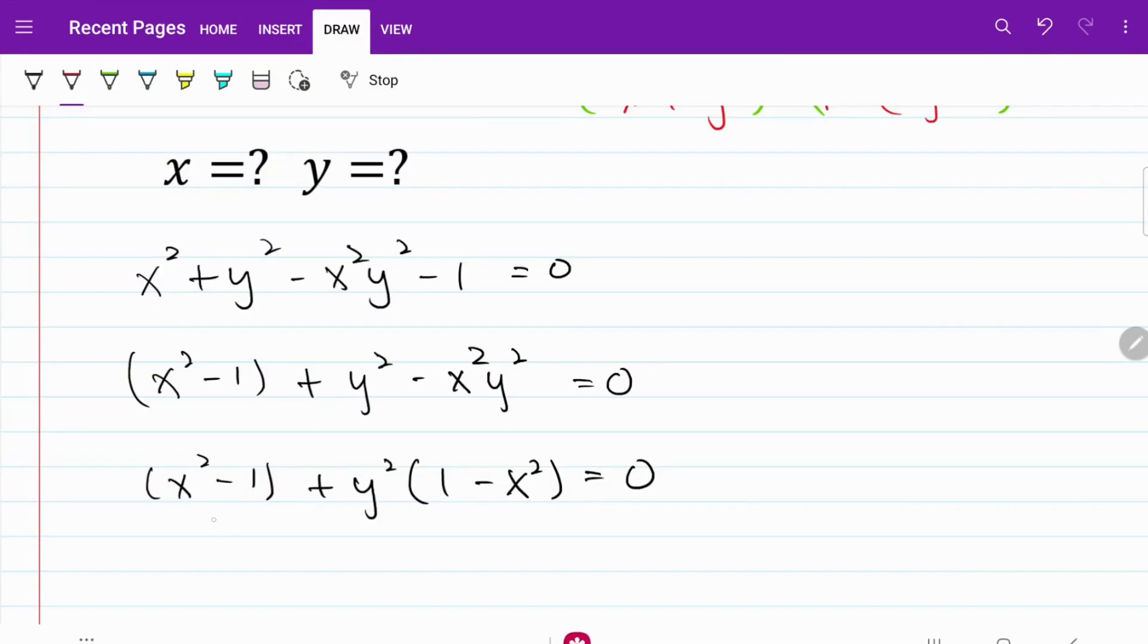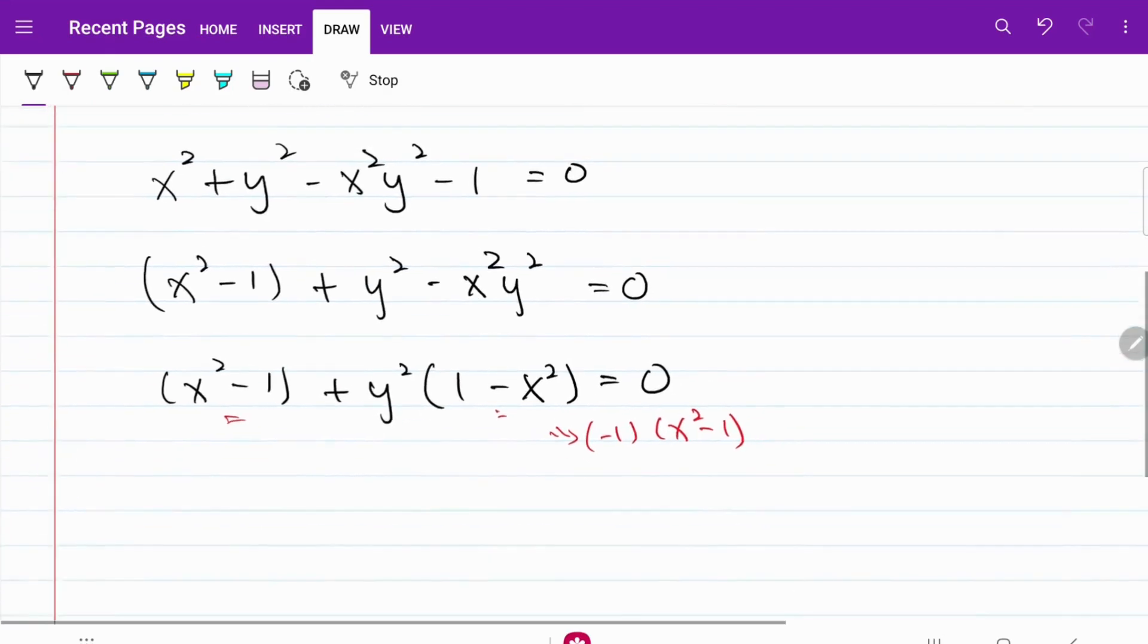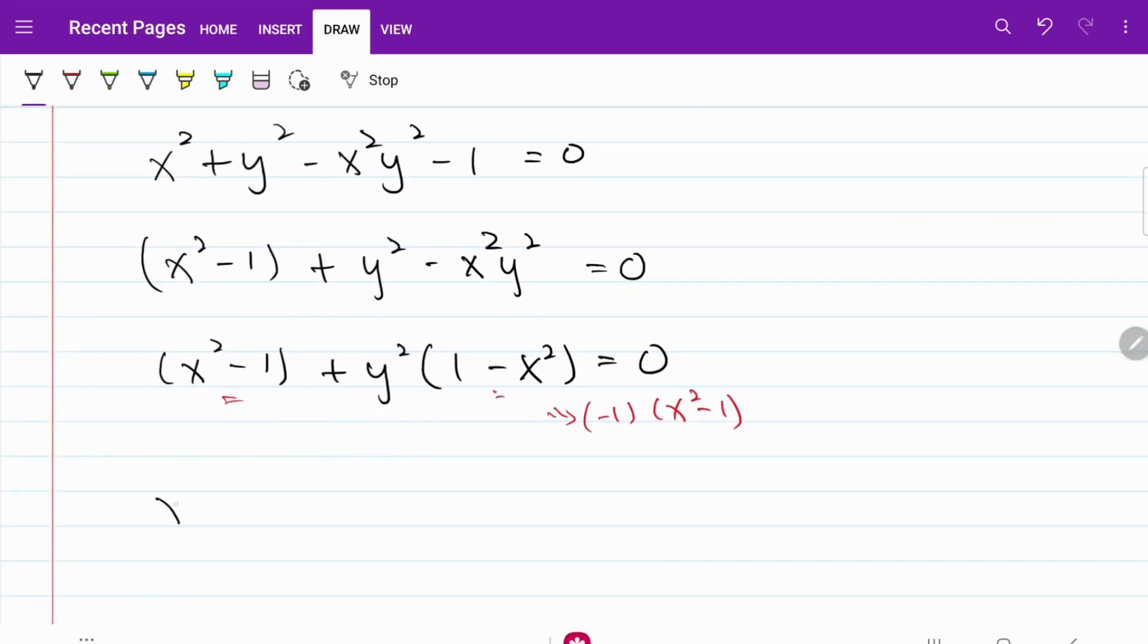We can relate the components on both brackets where 1 minus x squared is actually equal to negative 1 multiplied by x squared minus 1. So let's go ahead and do our factorization. I'm going to take out x squared minus 1. So this is equal to 1, and this is equal to minus y squared, and that's equal to 0.